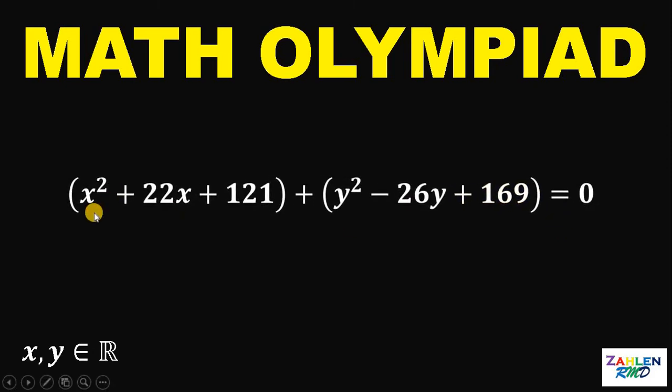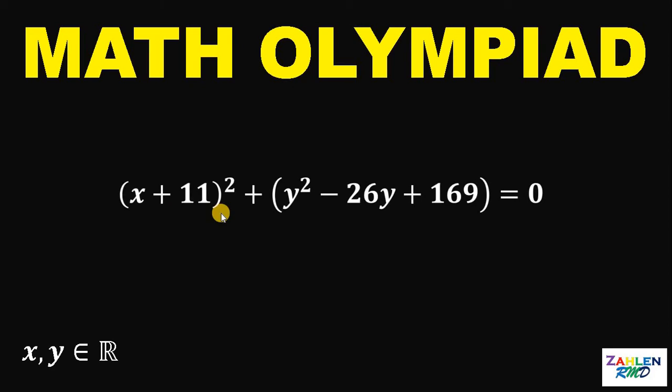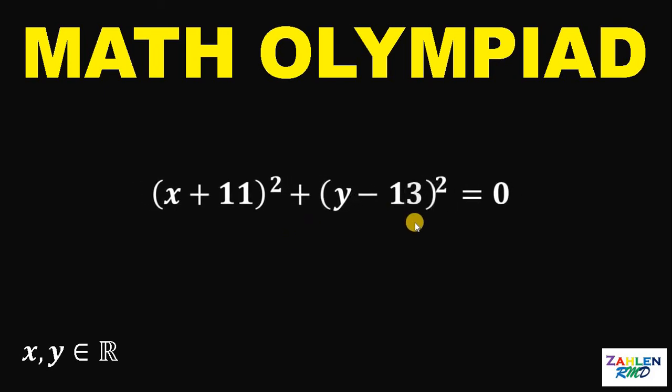So, we have now x squared plus 22x plus 121. We know this is a perfect square trinomial. And if we simplify this, this is just x plus 11 quantity squared. Also, this y squared minus 26y plus 169 is also a perfect square trinomial. And if we simplify this, this is just y minus 13 quantity squared.